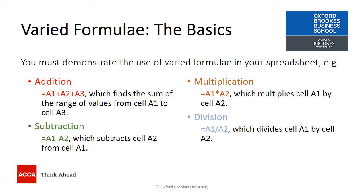You'll notice that for each one of them, if you want the spreadsheet to do this automatically for you, you have to put in an equal sign at the start. Then you will have the range of cells that you want to either add or subtract. For example, if you want to add together the values in A1, A2, and A3, you type in equals A1 plus A2 plus A3. If you want to multiply them together, like you might do for a ratio, you use the asterisk sign — so it's equals A1 asterisk A2. For division, because we don't have a division symbol on the keyboard, you just use the backslash: equals A1 backslash A2, and that would divide cell A1 by cell A2.